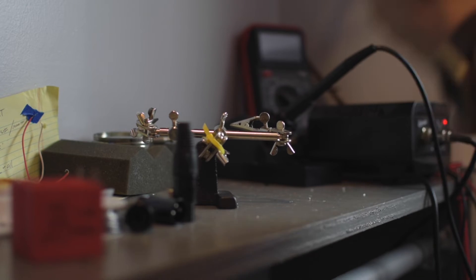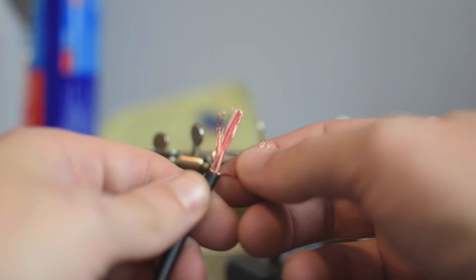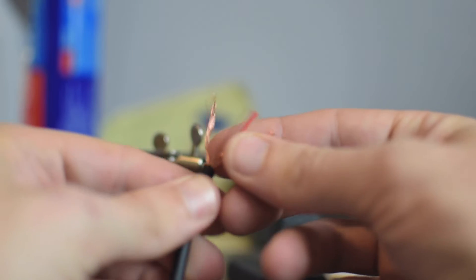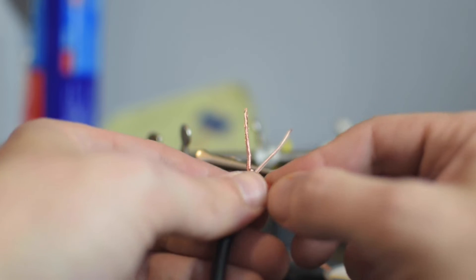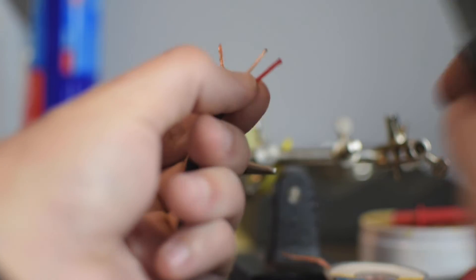Then we're going to strip the outside of the cable with our wire stripper. It should have a big notch on it, depending on what kind of wire stripper you've got. Then that'll unveil the ground, and we're just going to twist it around to make it its own wire.